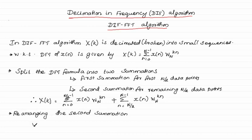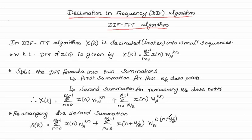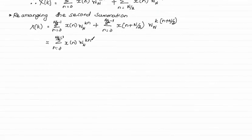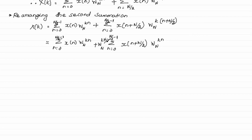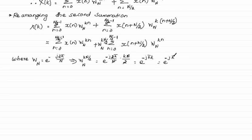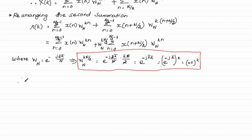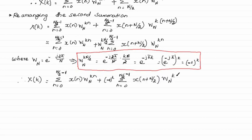Rearranging the second summation by substituting n equal to n plus N by 2, we get a new expression. In the second summation, we split the Wn term into two separate terms. Here, Wn power k times N by 2 is independent of n, so we take it outside the summation. We know the value of Wn, so the term Wn power k times N by 2 equals minus 1 power k. Substituting this value gives a new expression for X of K, where we take Wn power k times N as the common term.